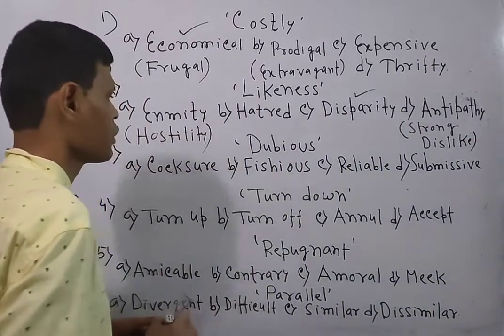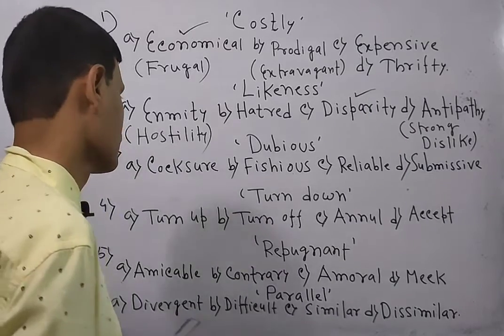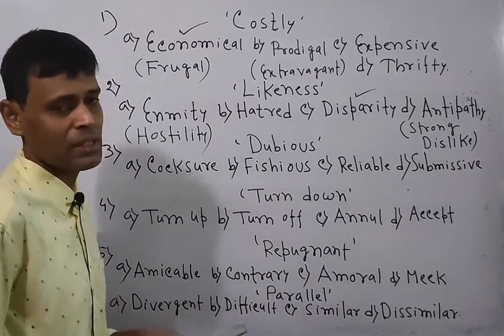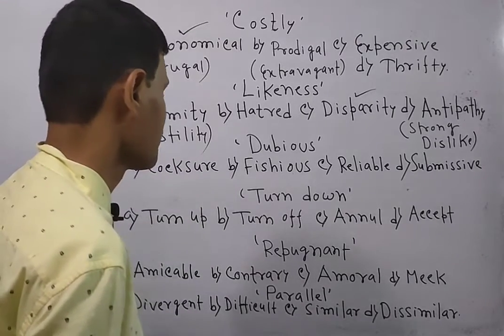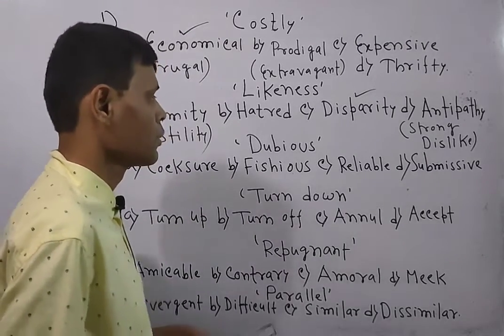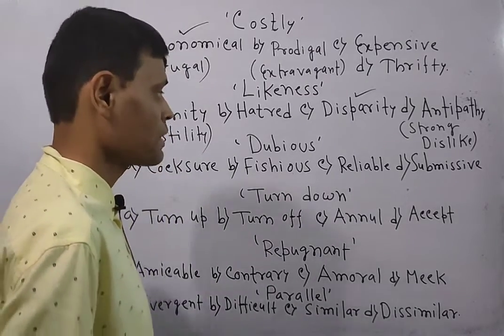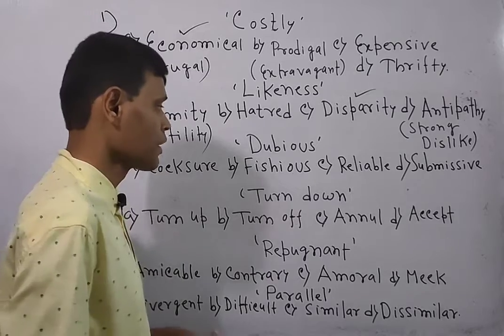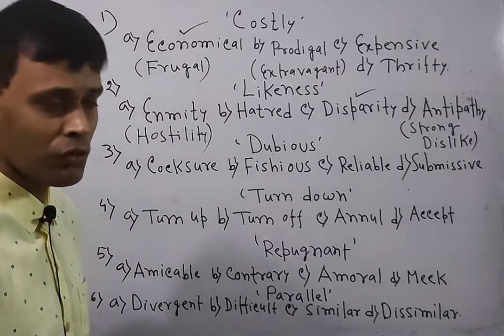Now look over the next question: dubious. Dubious means extremely suspicious. Cocksure means quite sure. Fishious means suspicious. Reliable means believable. Submissive means obedient. Fishious means devious or doubtful.